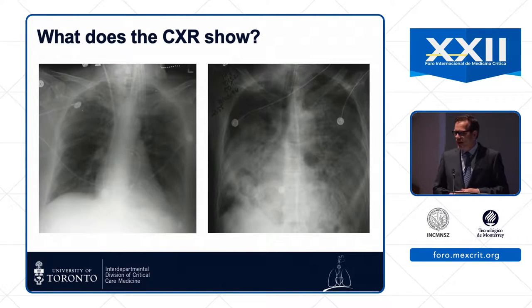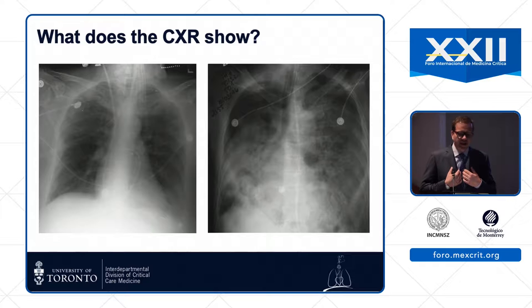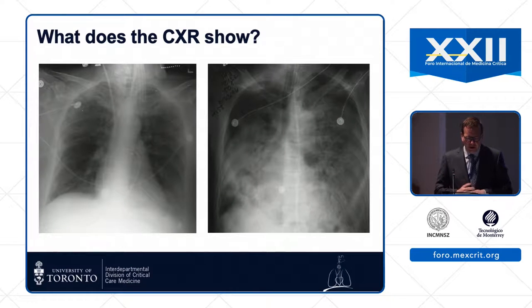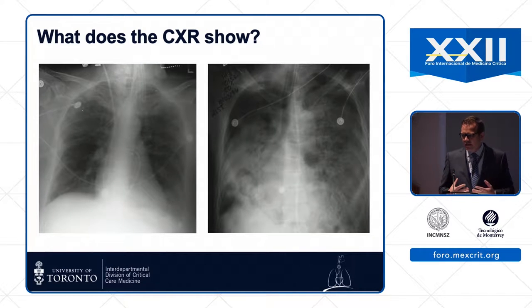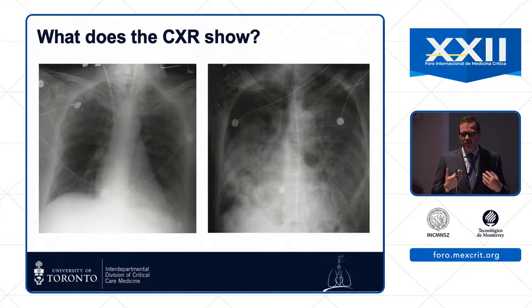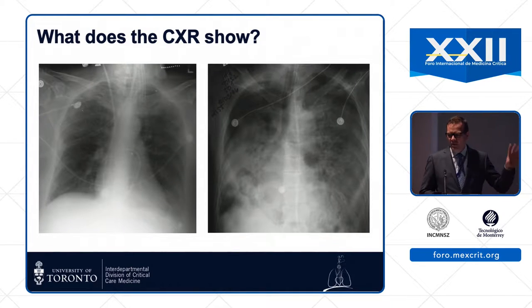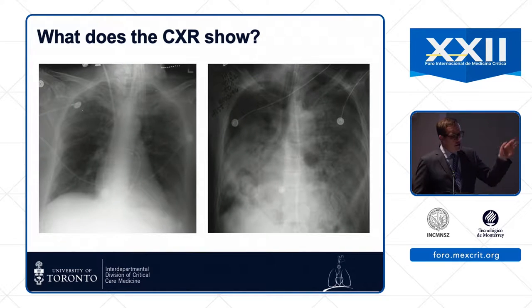Why might that patient have really bad hypoxemia with a clear X-ray? Maybe they have non-pulmonary shunting, intracardiac shunt, or they might have AVM — arterial venous malformations in their lung, or hepatopulmonary syndrome. They might have had a pulmonary embolus, or they might just be profoundly under-resuscitated, and when you're applying positive pressure you've decreased their cardiac output. But anyway, those are a minority of a minority. Most of the patients who are difficult to oxygenate have ARDS and have X-rays that look like the right-hand image.